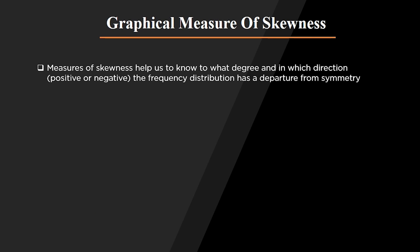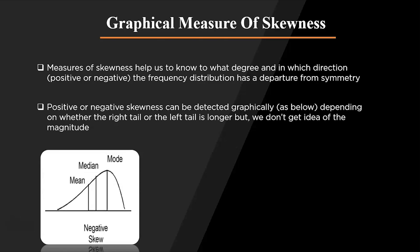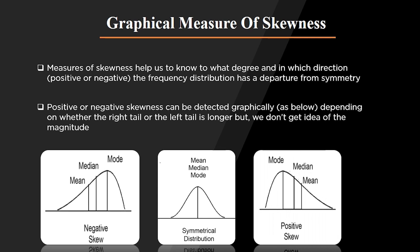The measure of skewness always helps us to know to what degree and in which direction — positive or negative — the frequency distribution has a departure from symmetry. Positive or negative skewness can be detected graphically depending on whether the right tail or the left tail is longer, but we do not get the idea of the magnitude. In a negatively skewed distribution the values are always negative, and in a positively skewed distribution the values are always positive.